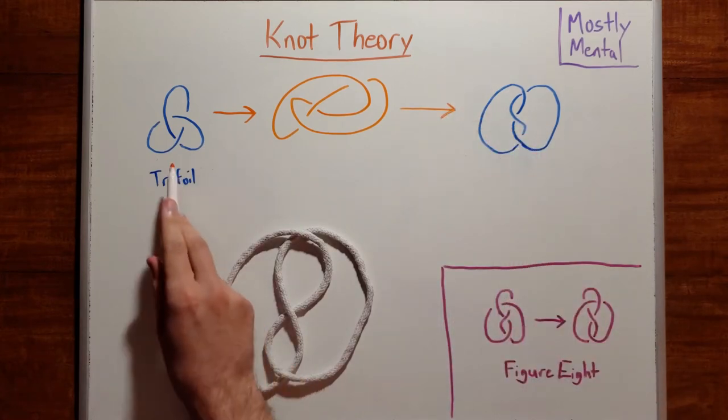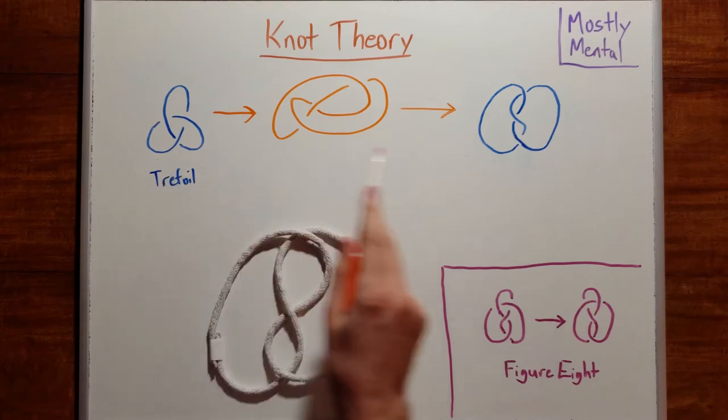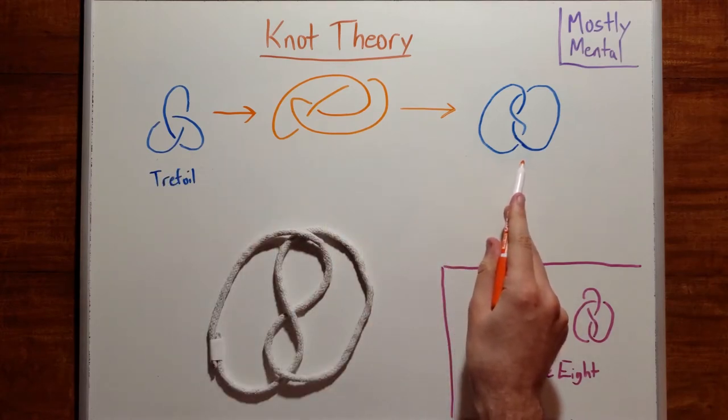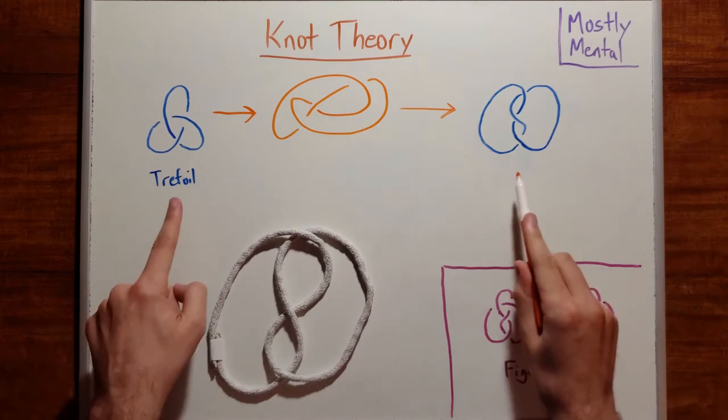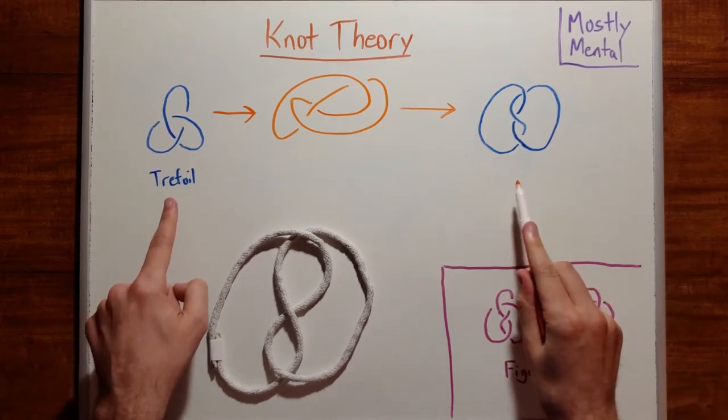So we started with a knot that looked like this and ended up with this shape. And since we never broke the loop along the way, that means these must be pictures of the same knot.